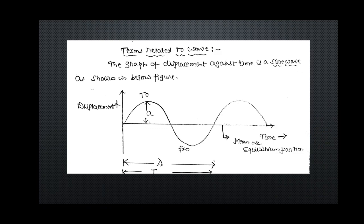In this diagram, small A stands for amplitude and one cycle means one up-and-down motion. Up motion is called crest and down motion is called trough. The distance traveled by the wave for one up-and-down motion is denoted by Greek letter lambda, called wavelength. The time taken by the wave to complete one cycle or one oscillation is denoted by capital T, called time period. The horizontal line is called the mean or equilibrium position.